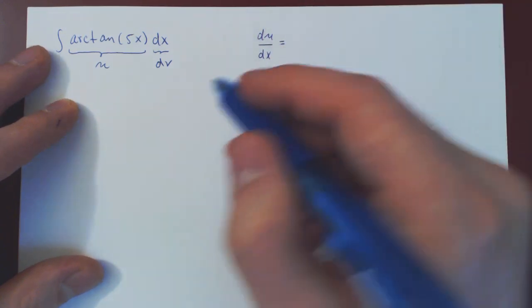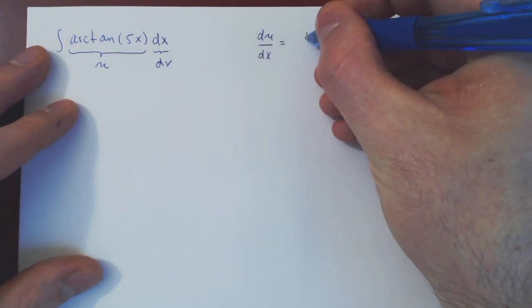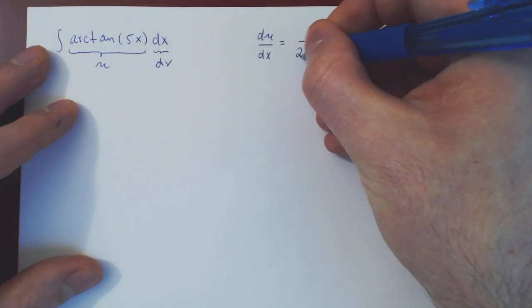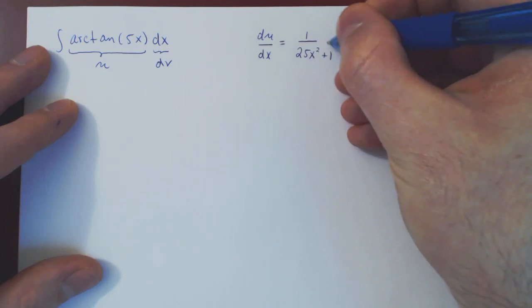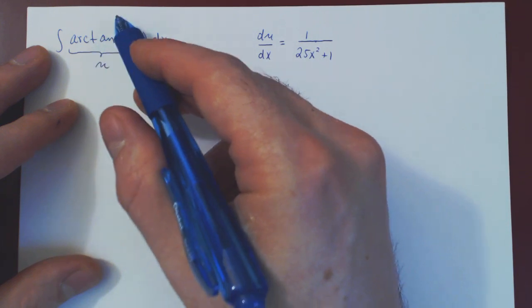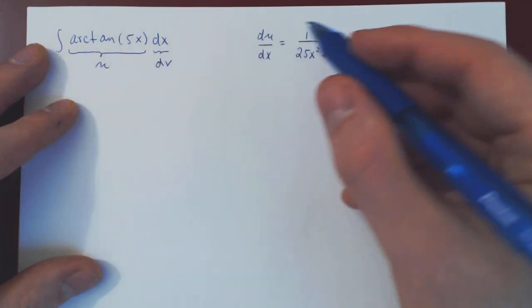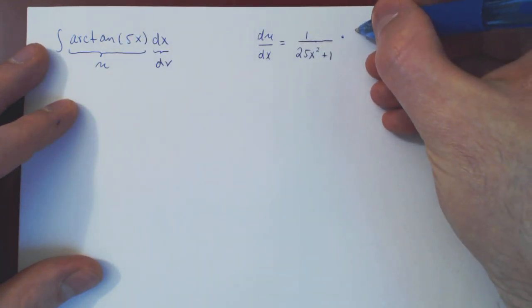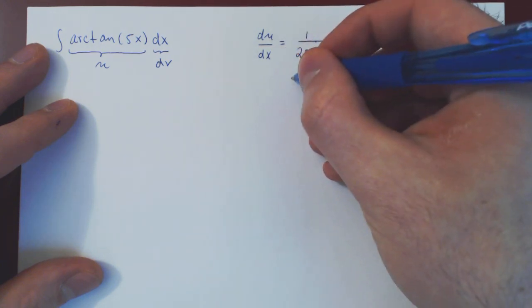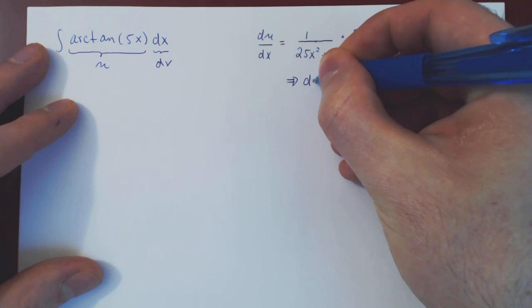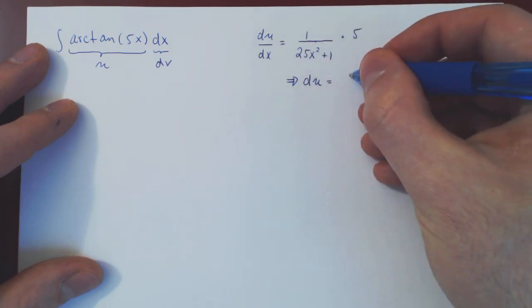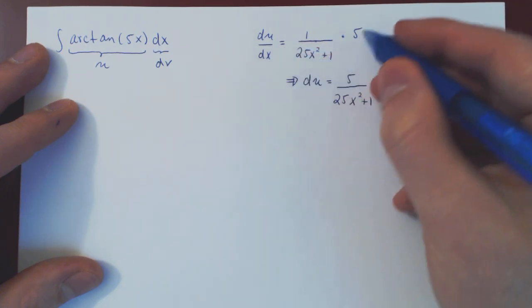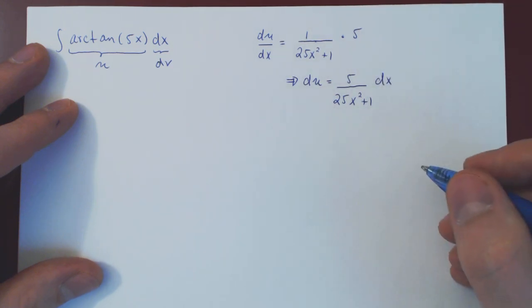And here be careful, if you differentiate the arctangent, you get 1 over the argument squared plus 1. So if you square this, you get 25x squared plus 1. But that's not it. This is just the derivative of the arctangent function. By the chain rule, we have to multiply what we have so far by the derivative of what's left over, which is 5x. The derivative of 5x is 5. So our du equals 5 over 25x squared plus 1, multiply across by dx. So we have our du.